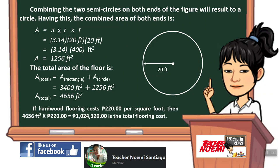If hardwood flooring costs 220 pesos per square foot, then 4,656 square feet times 220 pesos equals 1,024,320 pesos as the total flooring cost.